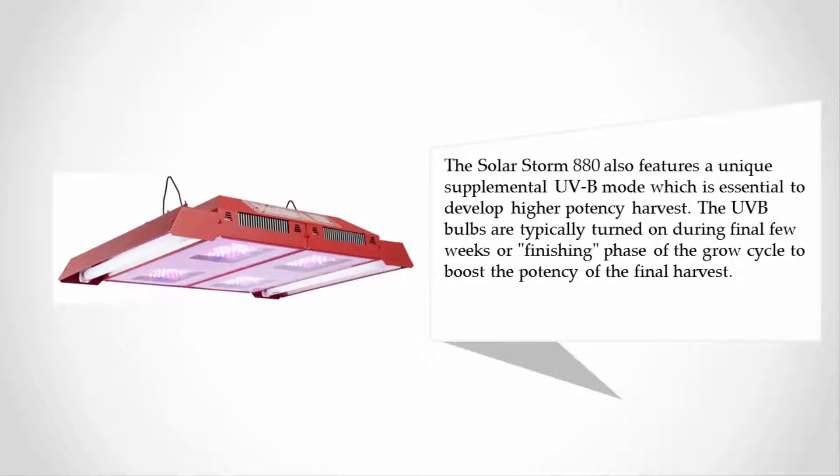The Solar Storm 880 also features a unique supplemental UVB mode which is essential to develop higher potency harvest. The UVB bulbs are typically turned on during the final few weeks or finishing phase of the grow cycle to boost the potency of the final harvest.